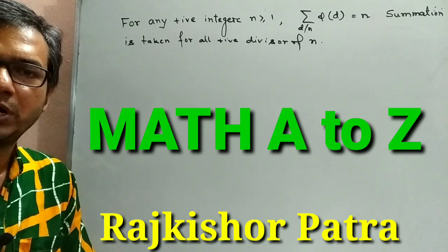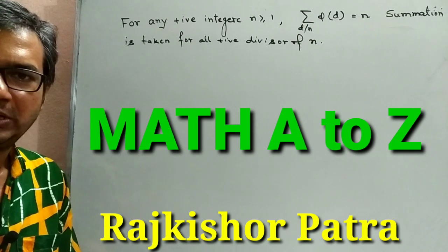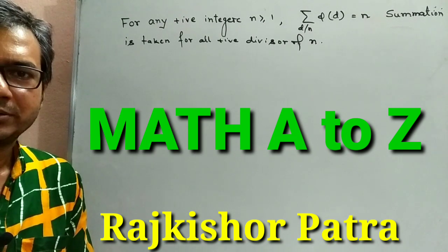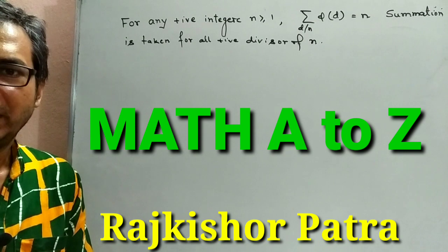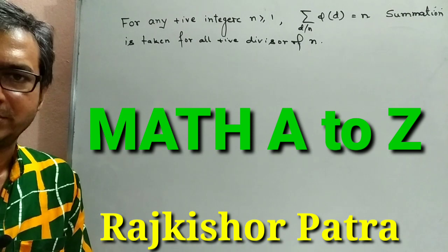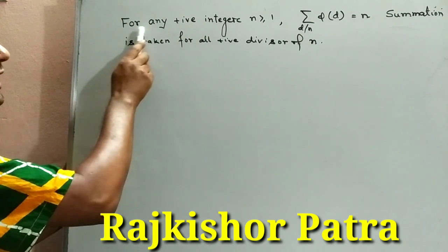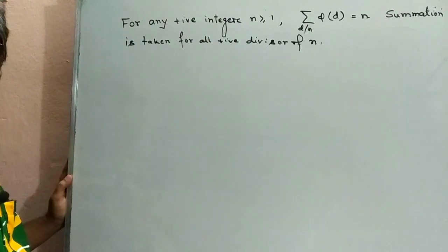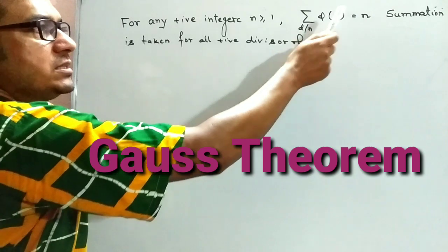Hi friend, welcome to Math A to Z. In this lecture, our topic of discussion is a very important property of Euler's phi function. The property is: for any positive integer n greater than or equal to 1, the summation of phi(d) where d divides n is equal to n.